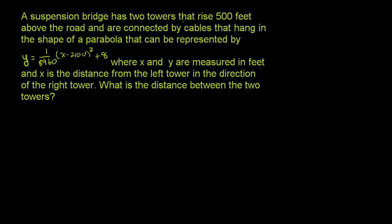A suspension bridge has two towers that rise 500 feet above the road and are connected by cables that hang in the shape of a parabola that can be represented by y equals 1 over 8960 times (x minus 2100) squared plus 8, where x and y are measured in feet, and x is the distance from the left tower in the direction of the right tower. What is the distance between the two towers? So let's draw ourselves a diagram.